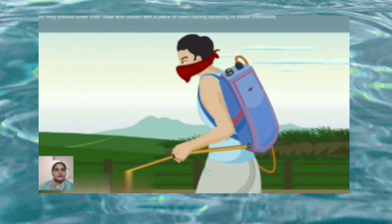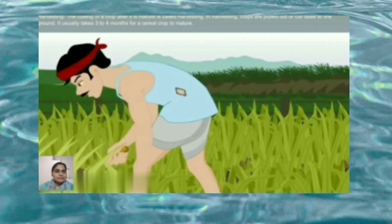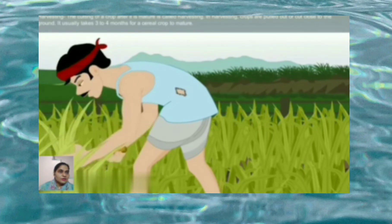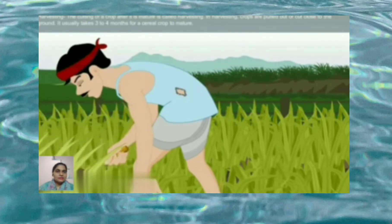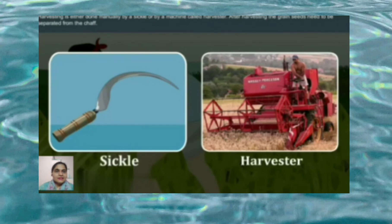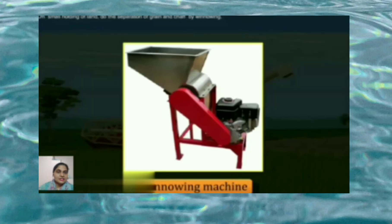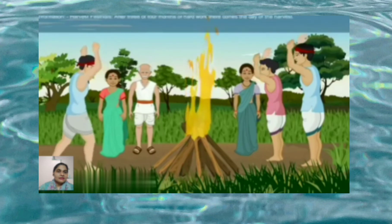Farmers should cover their nose and mouth with a piece of cloth during spraying of weedicides. Harvesting is the cutting of a crop after it is mature. In harvesting, crops are pulled out or cut. It usually takes three to four months for a cereal crop. Harvesting is done manually by a sickle or by a machine called a harvester. After harvesting, the grain seeds need to be separated — the process is called threshing. This is carried out with a machine called a combine, which is in fact a combined harvester and thresher.